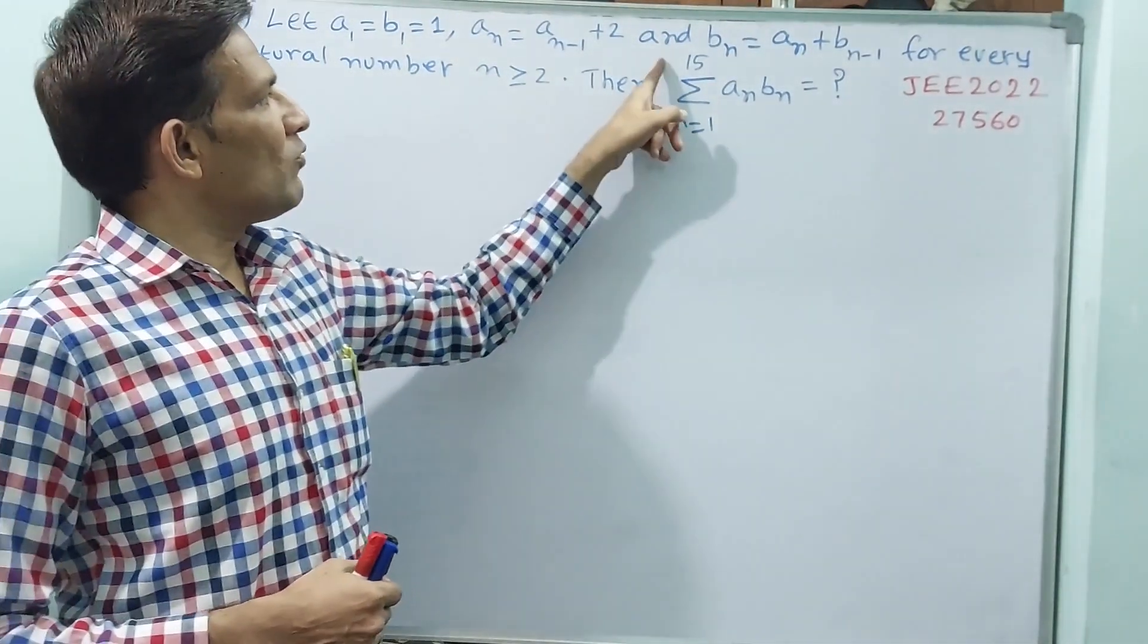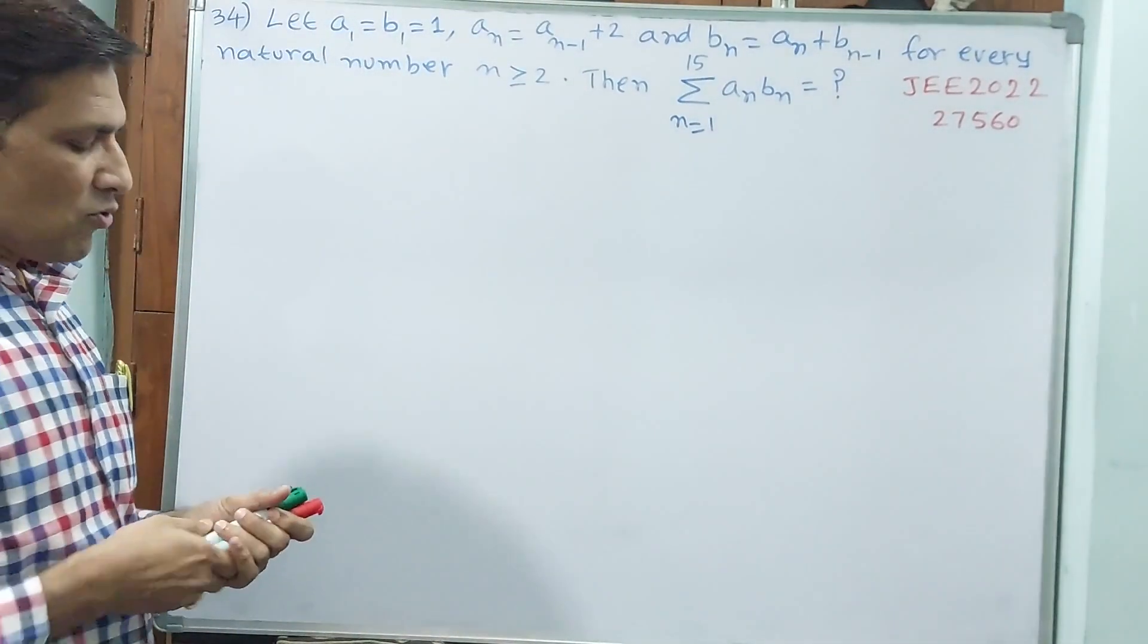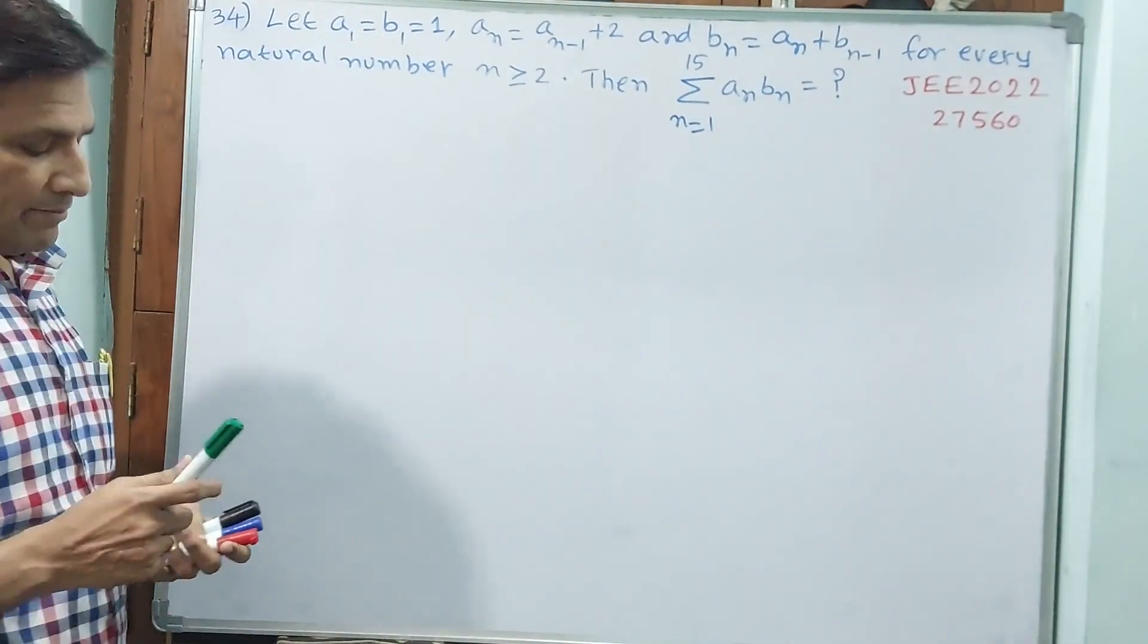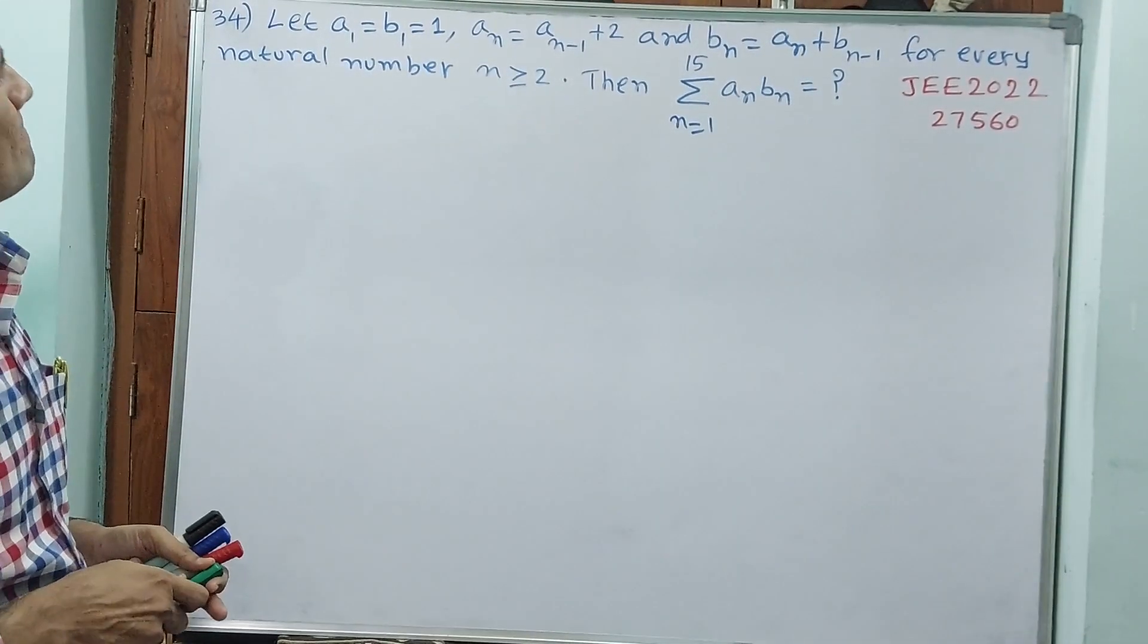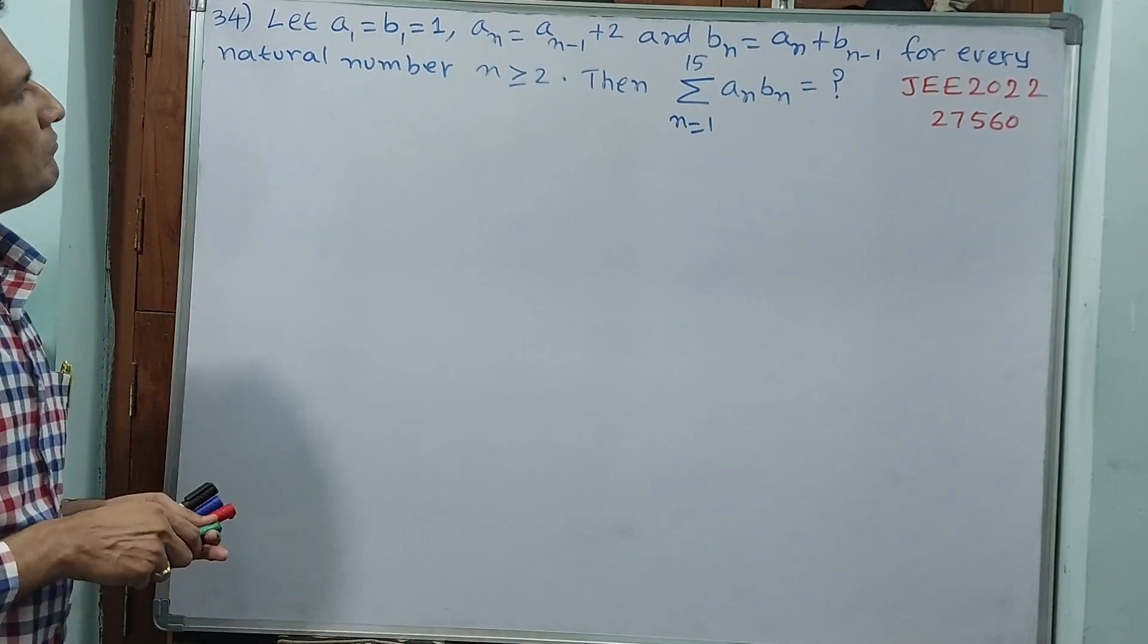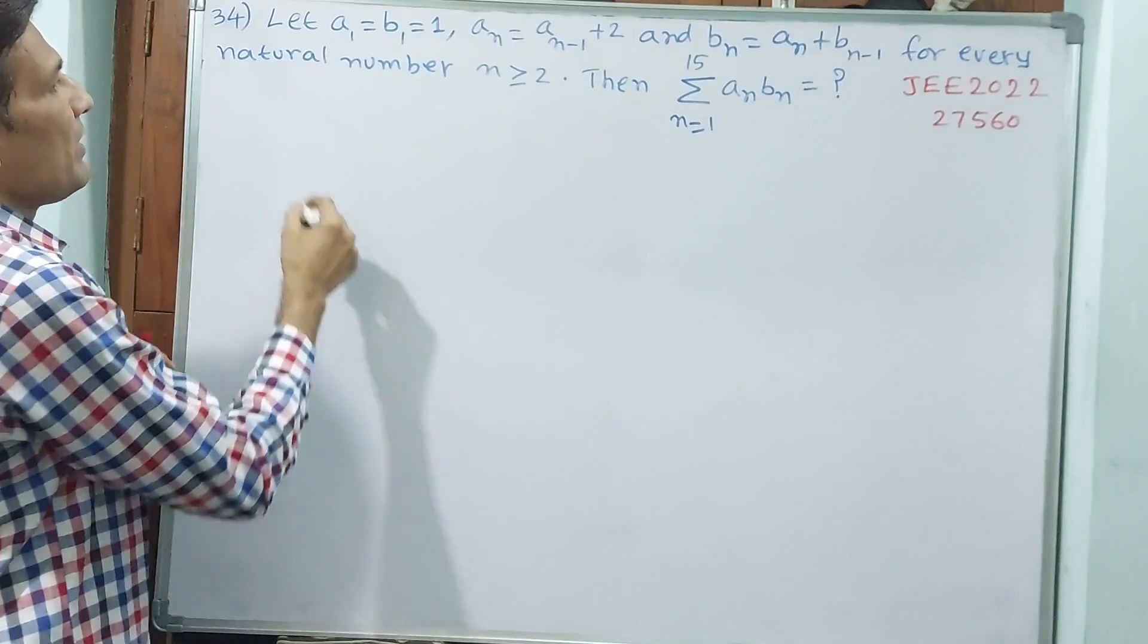Then sigma n equals 1 to 15, a_n into b_n is equal to how much. This is series, good question. I have taken it and we will solve it. Now let us see, first we will complete a1, then we will go for b.